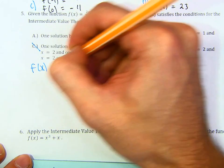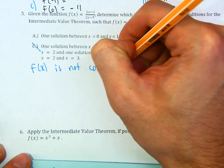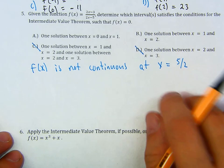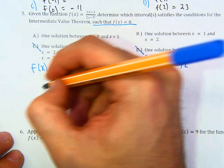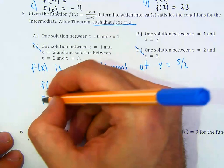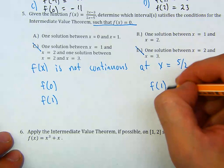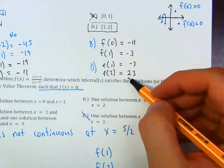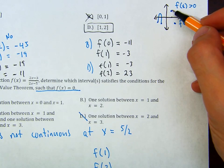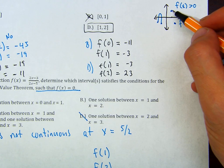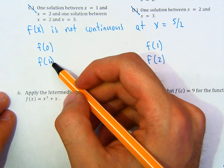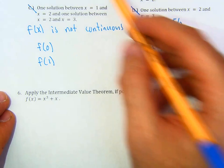f of x is not continuous at x equals 5 over 2. Now, for there to be a root, notice it's the same idea — one of the f of x values has to be positive and one has to be negative. So let's plug in: what is f of 0 and f of 1? What is f of 1 and f of 2? Pause the video and try it — no calculator.